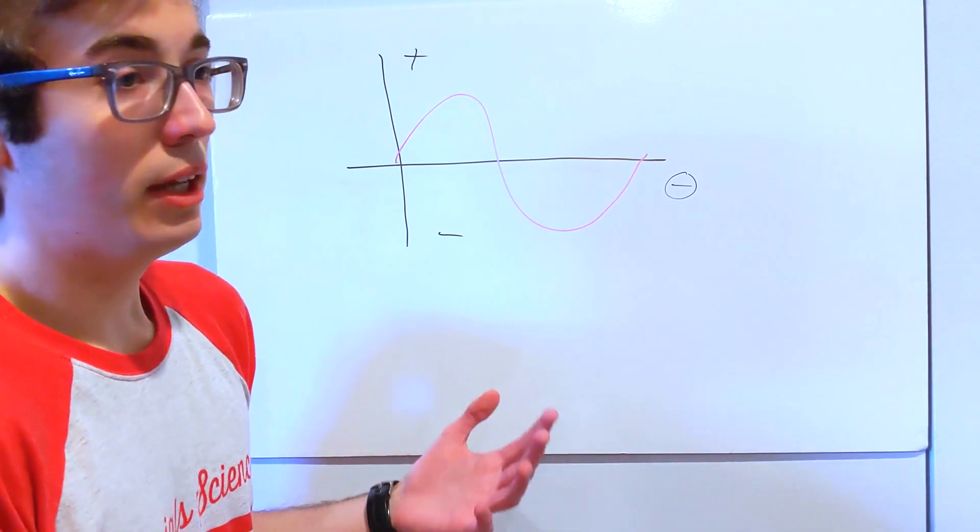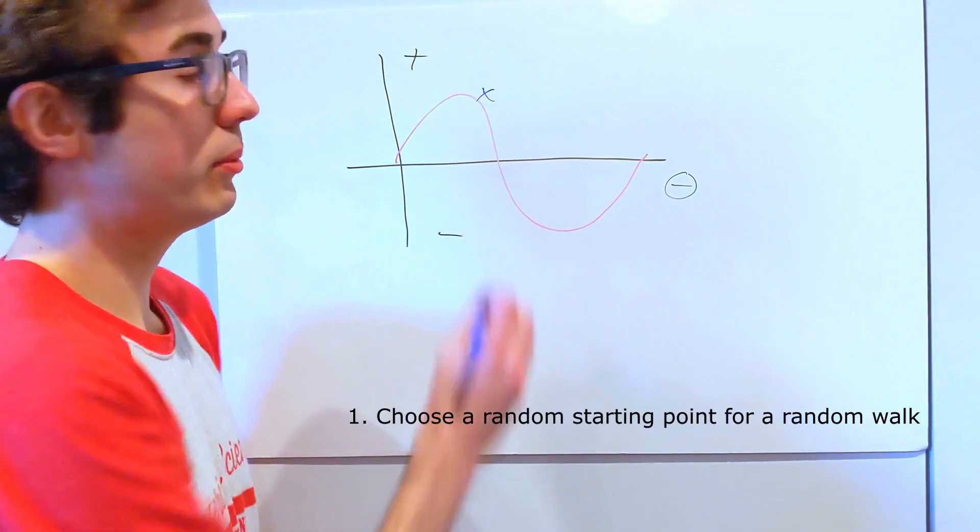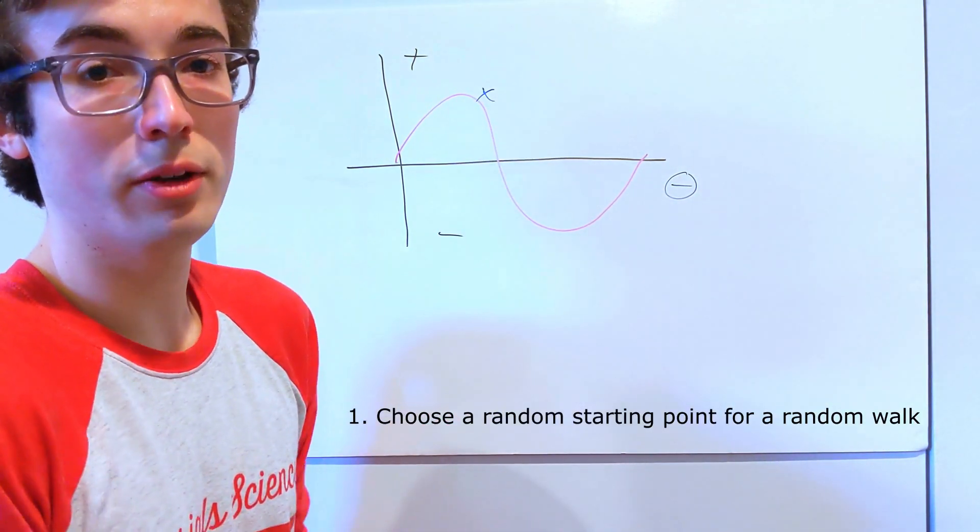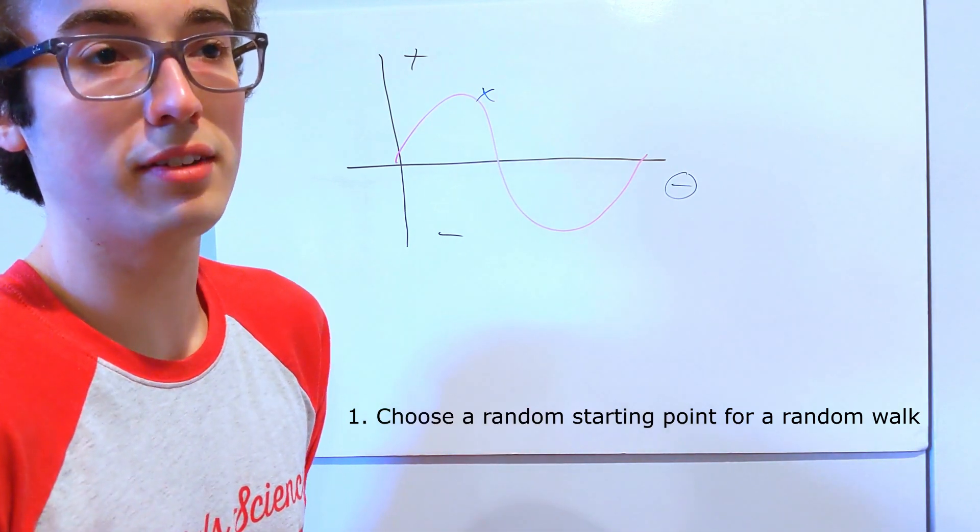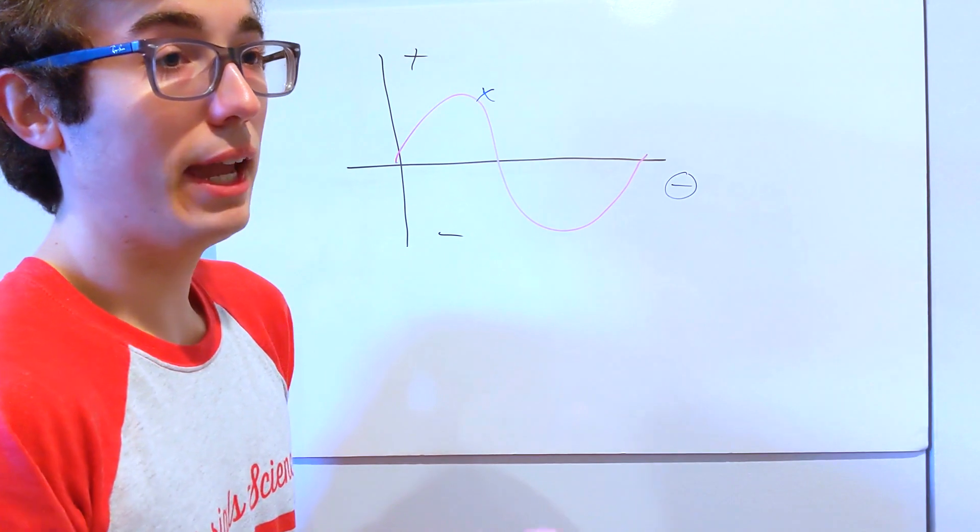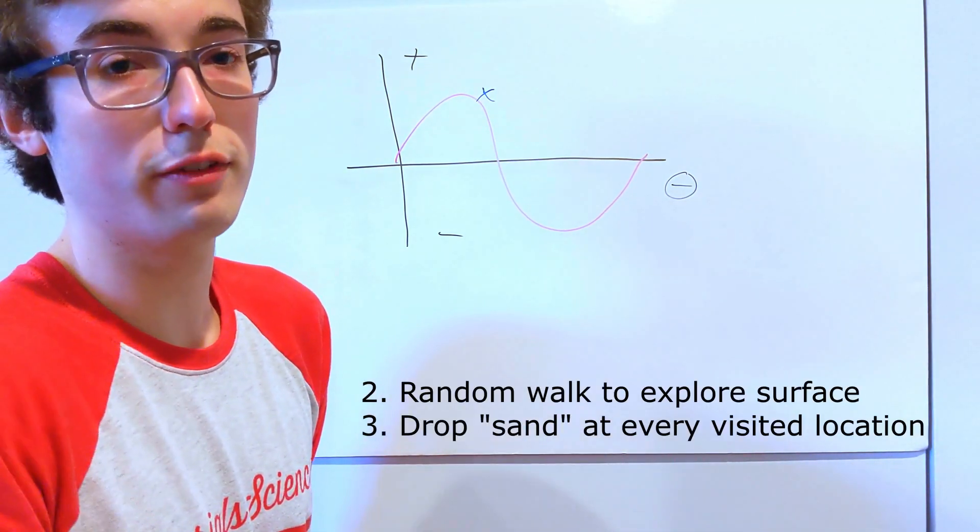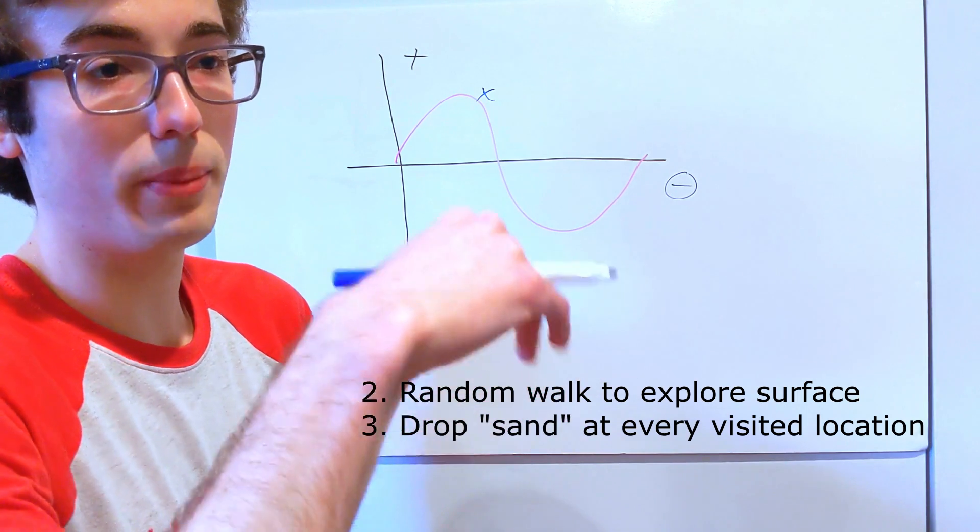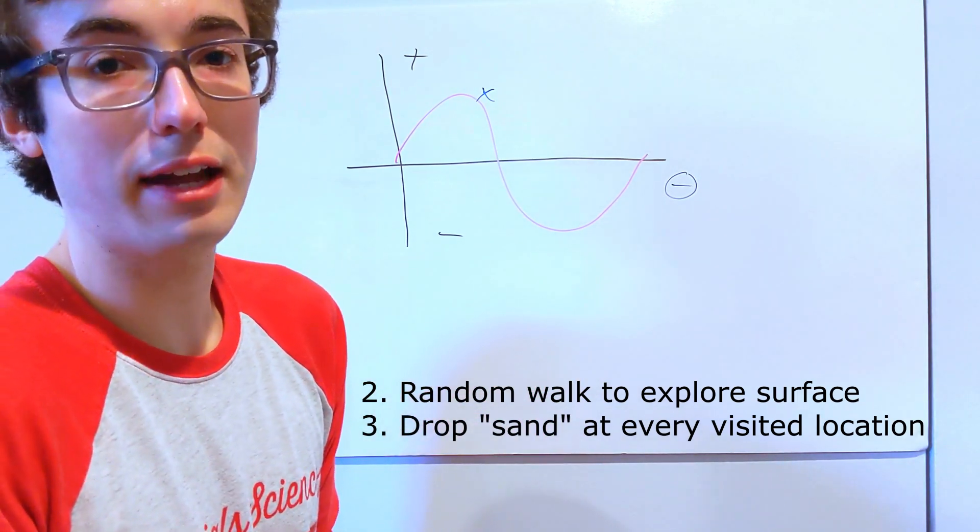So what that might look like is the ant chooses randomly some configuration of the system, which is some arrangement of CVs, and that's like the starting point of a random walk. And from there, the ant is going to do a random walk around the surface, exploring different parts, and dropping little packets of sand, which are traditionally gaussians.